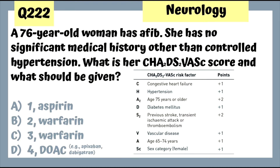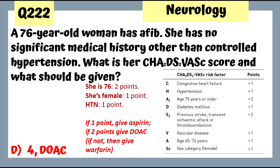Question 222: A 76-year-old woman has AFib with no significant medical history other than controlled hypertension. Her CHA₂DS₂-VASc score: female (1 point), age 76 (2 points), controlled hypertension (1 point) — total 4 points. Therefore we give her a DOAC. If the score were 1 we would give aspirin, but since it's two or above we give a DOAC; if not a DOAC candidate, we would give warfarin.